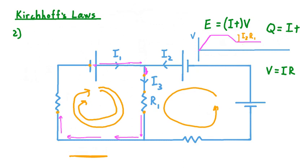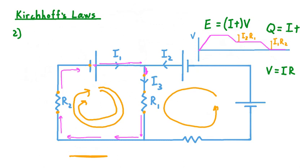Once our charge reaches this second resistor, which has resistance R2, as the charge crosses over it will experience a potential drop. In magnitude, that drop equals I1 — the current that exists through this resistor — multiplied by the resistance value R2. Once our charge has made it through this last obstacle, it can complete its circuit back at the negative terminal of our voltage supply. Looking at our sketch of voltage across this current loop, we see that we start at zero and also end at zero volts.